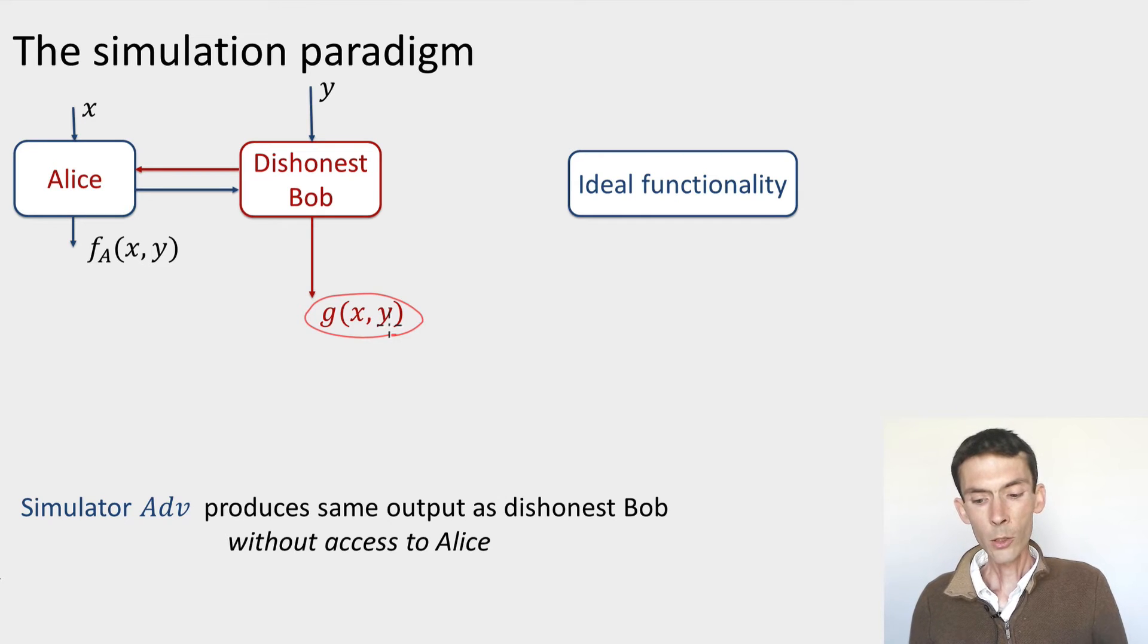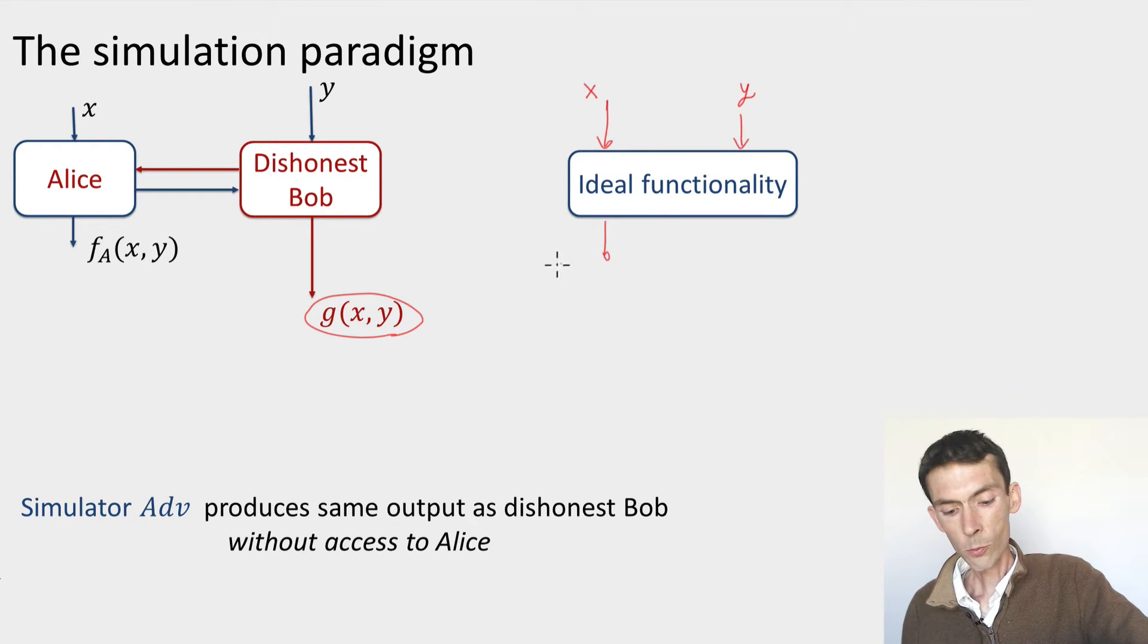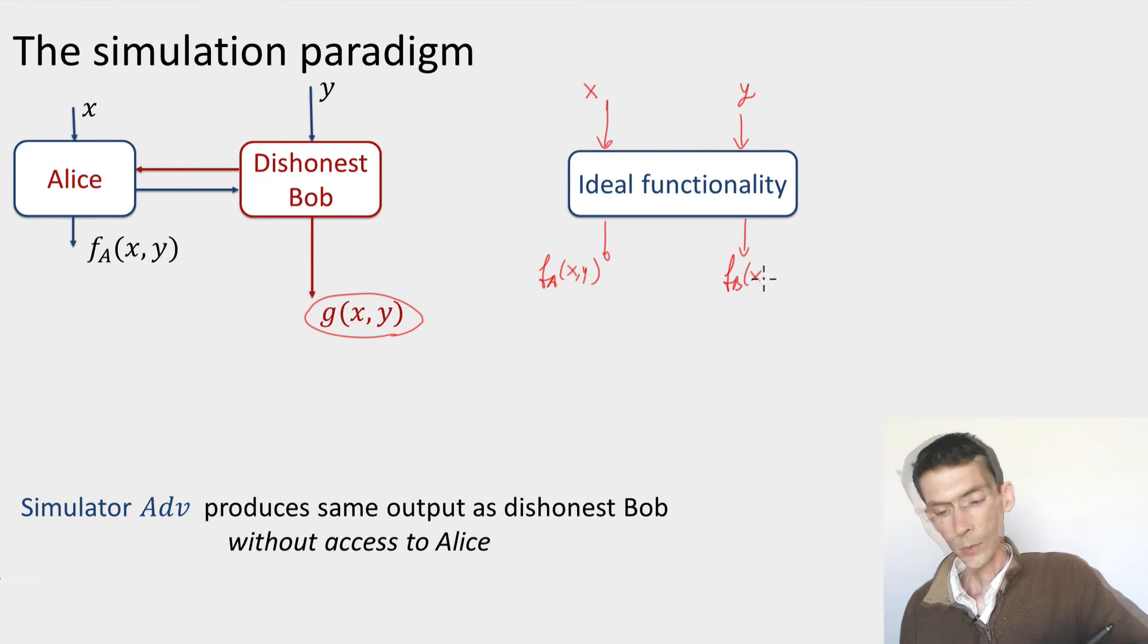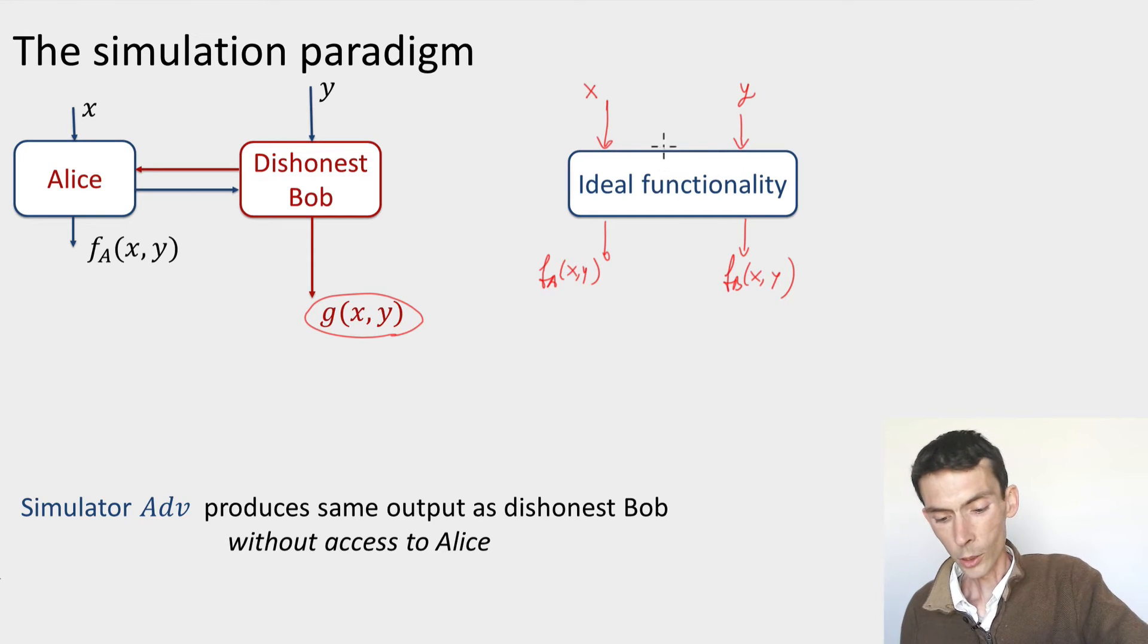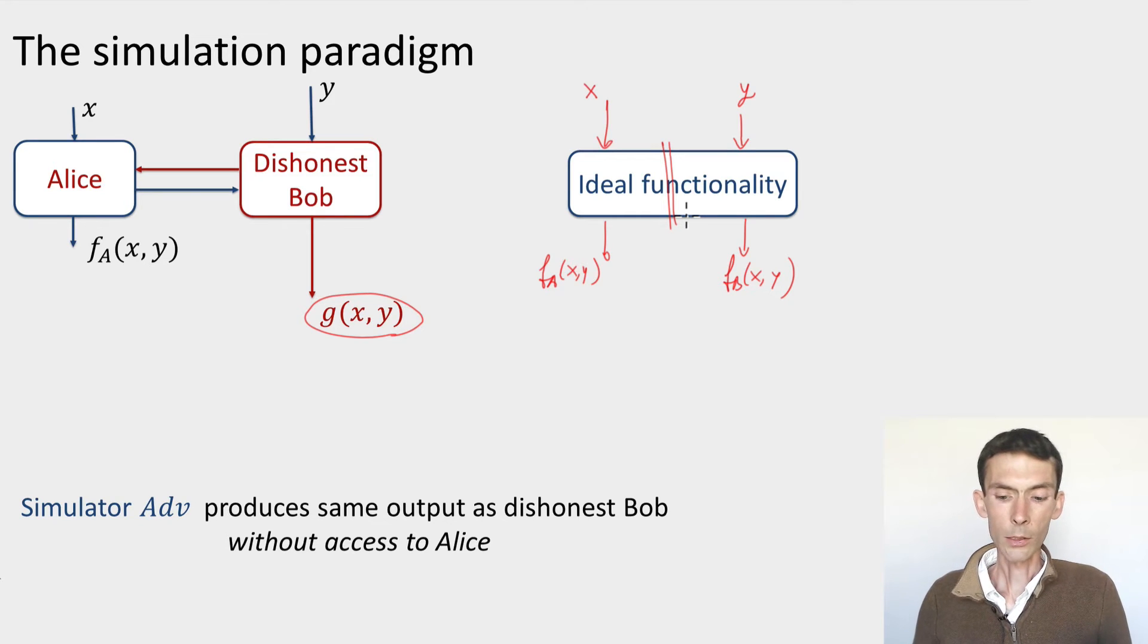The idea is to introduce something called the ideal functionality. The ideal functionality is some kind of an ideal box. It doesn't need to exist. It's just meant for the proof that does exactly what honest protocol should be doing. Meaning this ideal functionality takes inputs X and Y, and it returns output FA of X, Y, and FB of X, Y without any communication. This is just a box that does what it's supposed to do. So there's no, this is separated. It just magically does the exact right thing. And we'd want our protocol to look like this magic box.